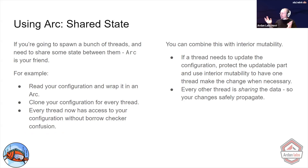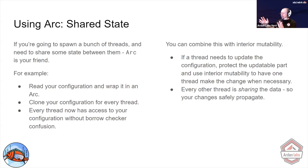If you've got a global configuration, read it into an ARC and send clones of that into all the places that need your config — much better than having a global variable. Likewise, if you've got database pools, they're designed to be cloned. You clone access to the pool, so you've got one set of database connections. Physical access to hardware can also be put through an ARC when working with embedded systems.